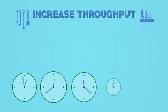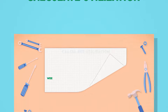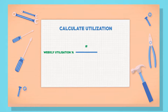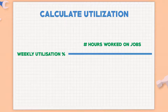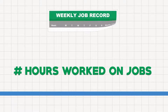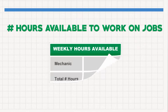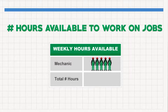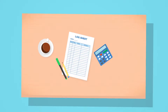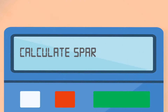The first thing you need to learn is how to calculate utilization. To calculate weekly utilization, divide the number of hours worked on jobs by the number of hours available to work on jobs. Take the number of hours worked on the job from the weekly job record, then add the number of hours available to all mechanics throughout the week.